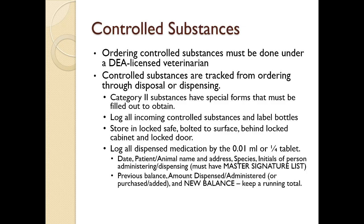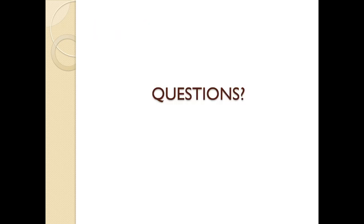Ordering controlled substances must be done under a DEA-licensed veterinarian, and we must track them from ordering through dispensing and disposal. Category 2 substances require special forms to obtain. We log all incoming controlled substances, label all bottles, store them in a locked safe bolted to a surface, inside a locked cabinet behind a locked door. All dispensed medication is logged typically to 0.01 mls or a quarter tablet. Each entry requires the date, patient name, species, address, and initials of the person dispensing — with a master signature list to identify initials. A running total is maintained: previous balance, amount dispensed, new balance. Bring any questions about filling out a log to class.